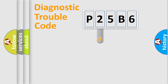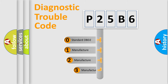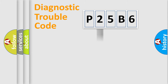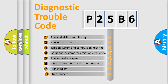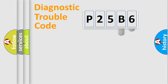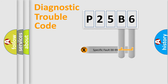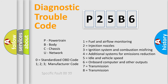This distribution is defined in the first character of the code. If the second character is expressed as zero, it is a standardized error. In the case of numbers 1, 2, or 3, it is a manufacturer-specific error. The third character specifies a subset of errors. The distribution shown is valid only for the standardized DTC code. Only the last two characters define the specific fault of the group. This division is valid only when the second character is zero.